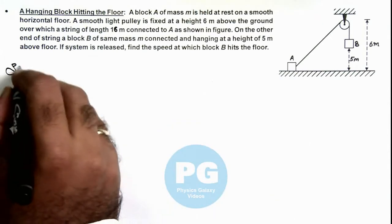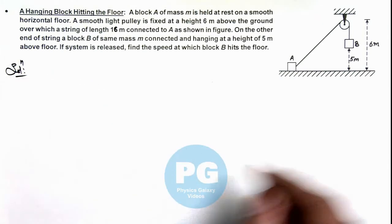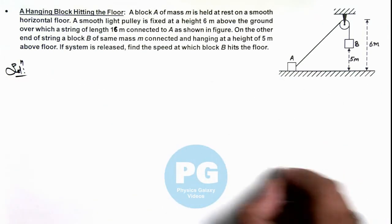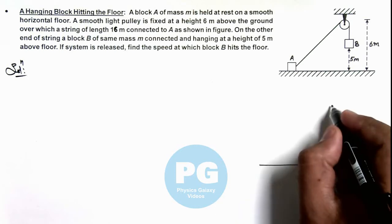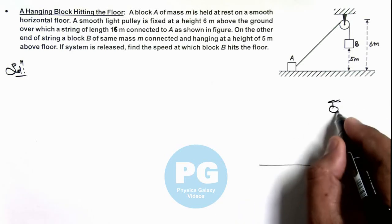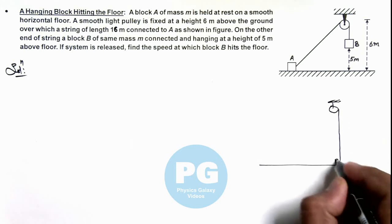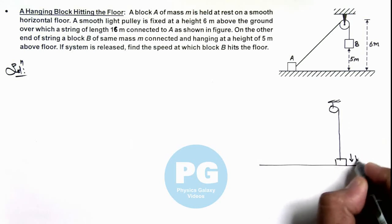Here in the solution, we can first relate the speed of the two blocks by constraint relation. When block B will be hitting the floor, you can see if block B is moving down at a speed v.